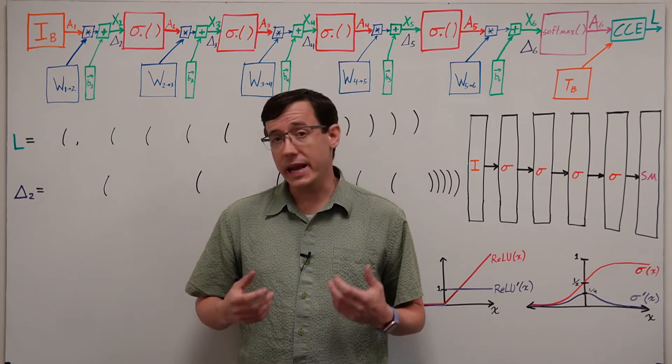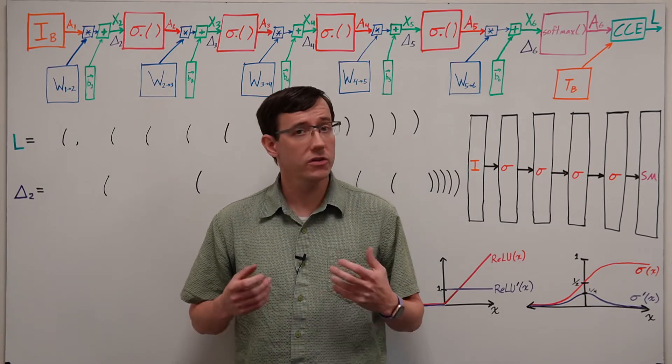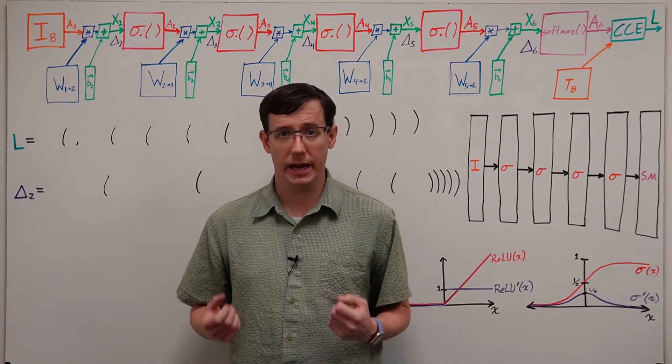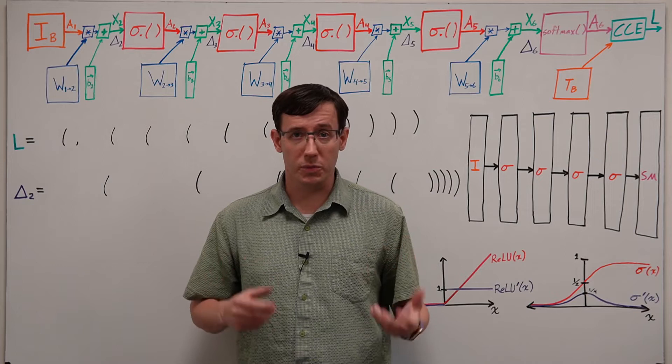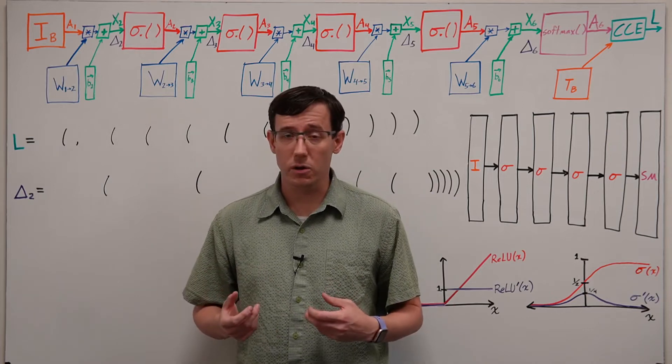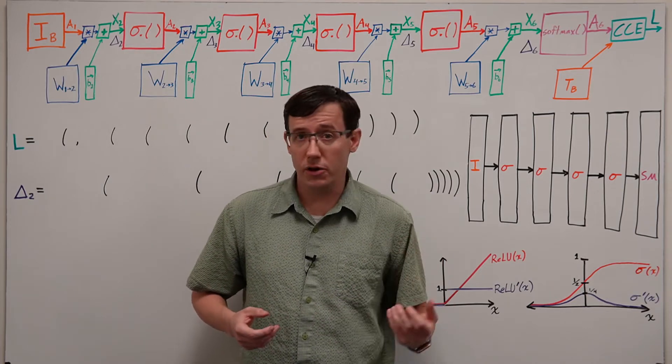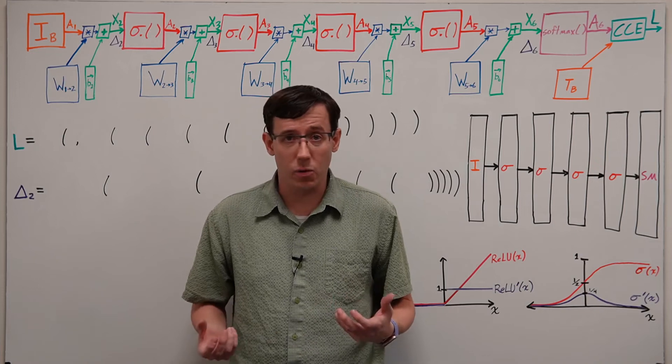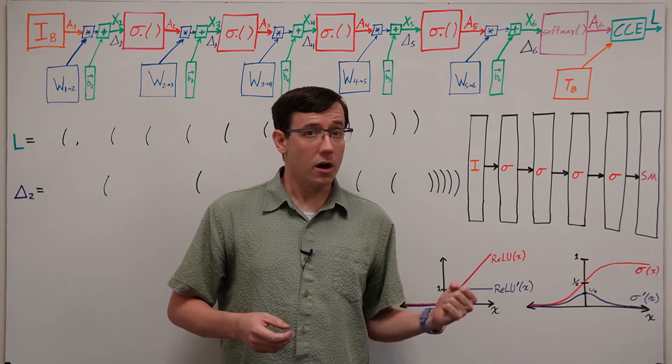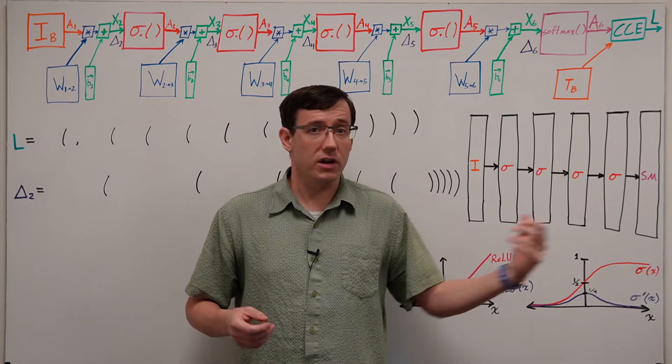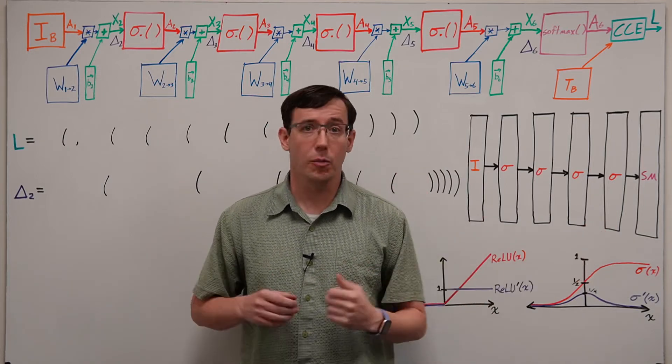Let's start by thinking about a deep neural network with sigmoid activations for the hidden layers. There are several different ways we could visualize what such a network computes. In previous videos I've drawn all of the nodes and all of the edges in the network, but when we start thinking about deep networks with potentially hundreds of nodes in a layer and dozens of layers, that's not at all practical.